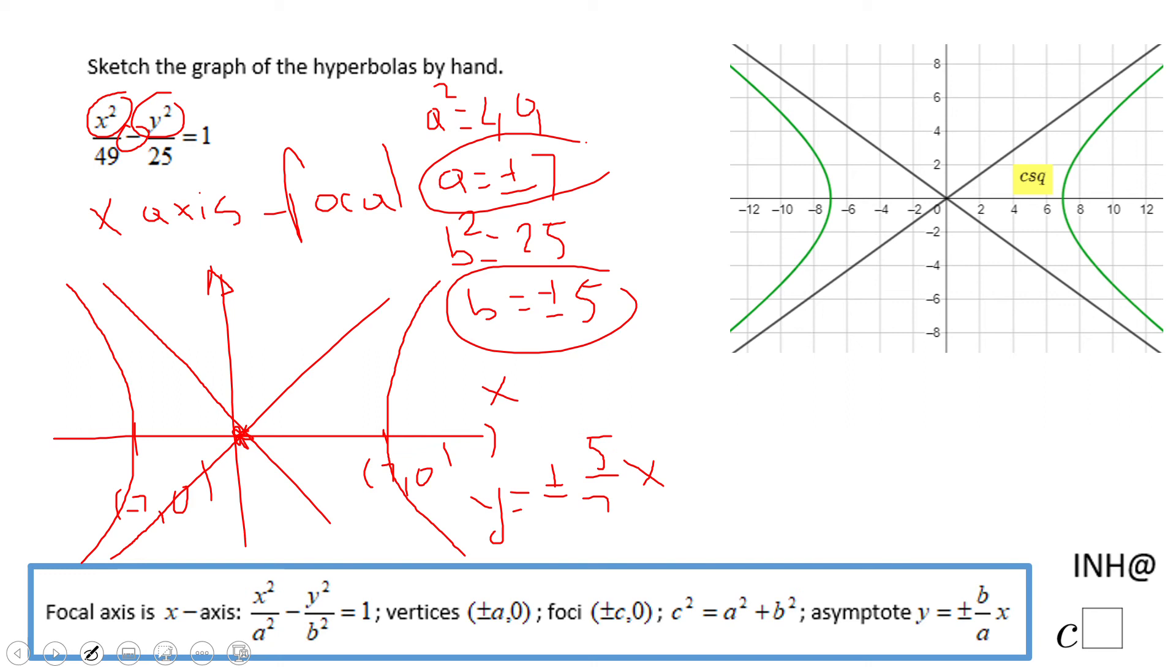If you need to find the foci, which sometimes is the case, you need to add a squared and b squared. So c squared will be 49 plus 25, which is 74. So c will be plus or minus square root of 74 if you need that.